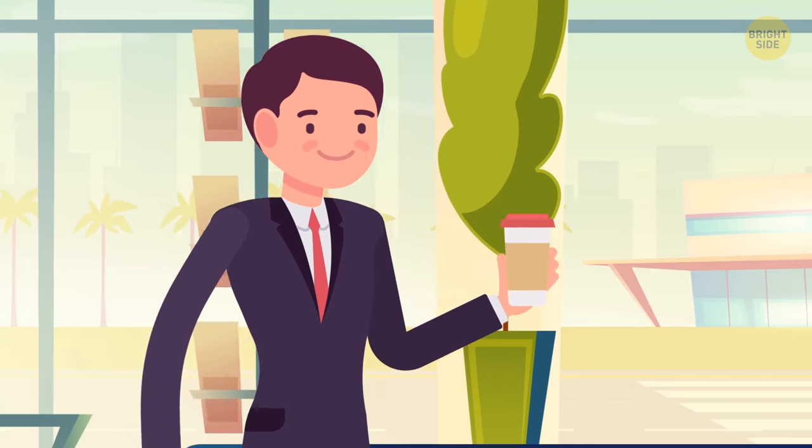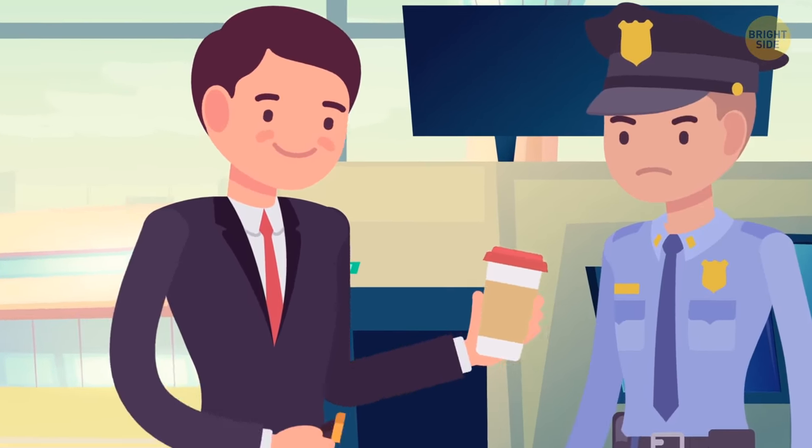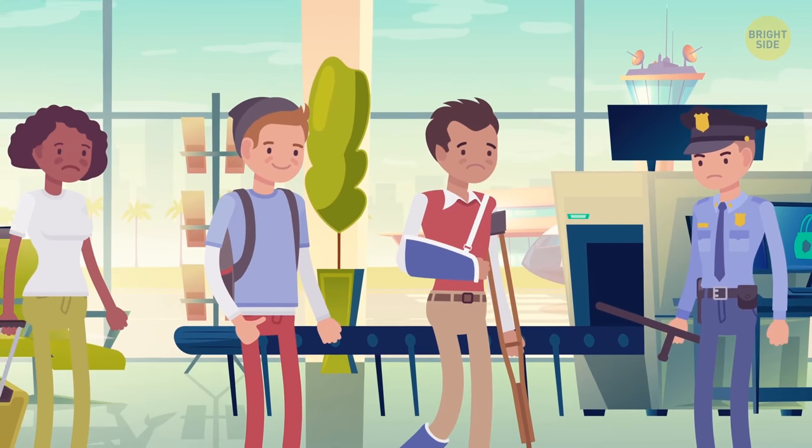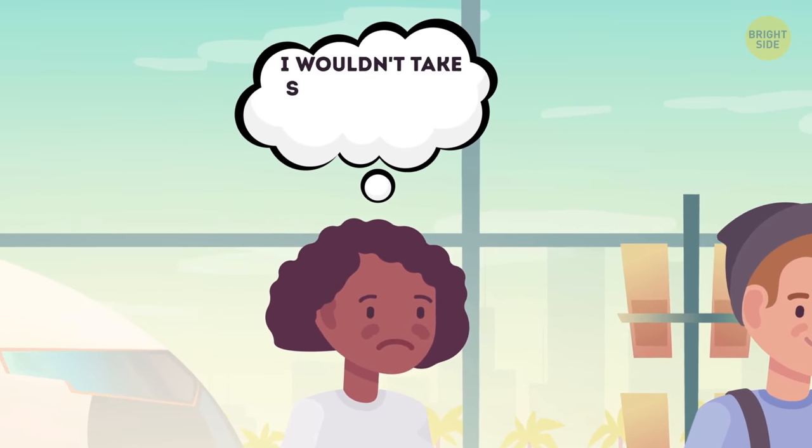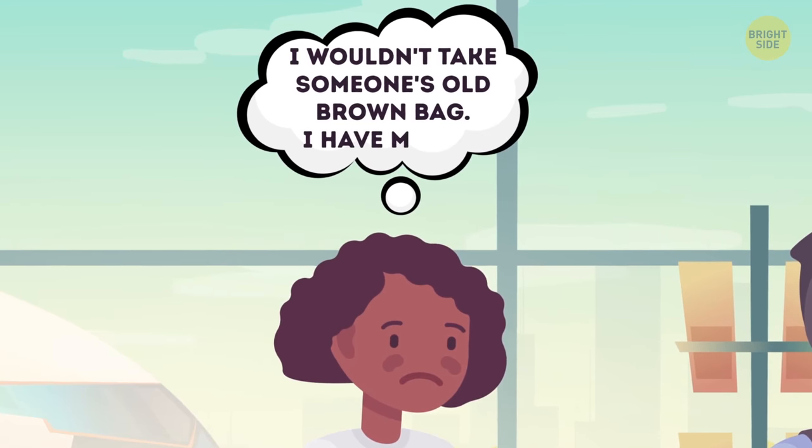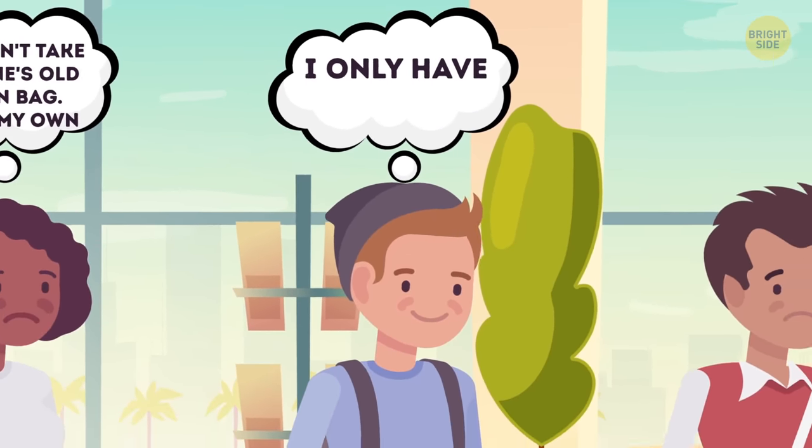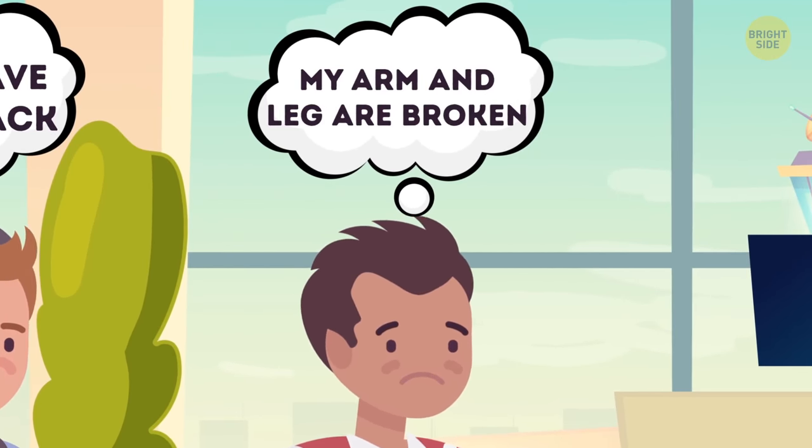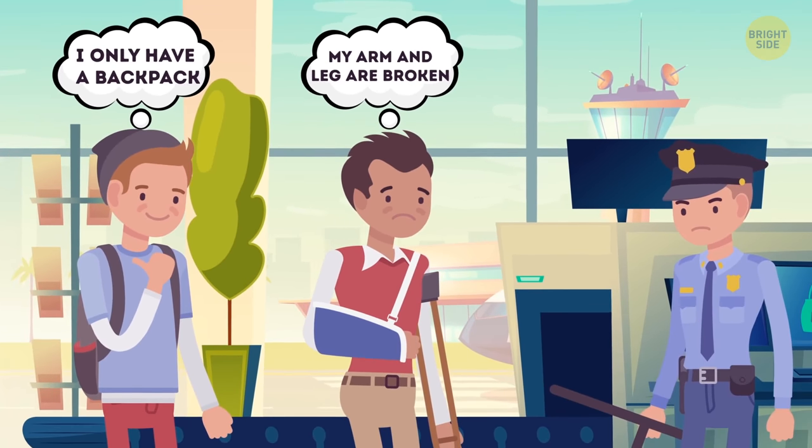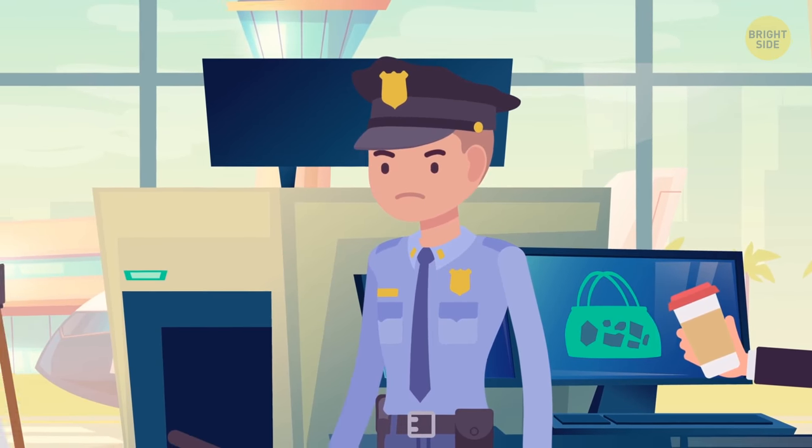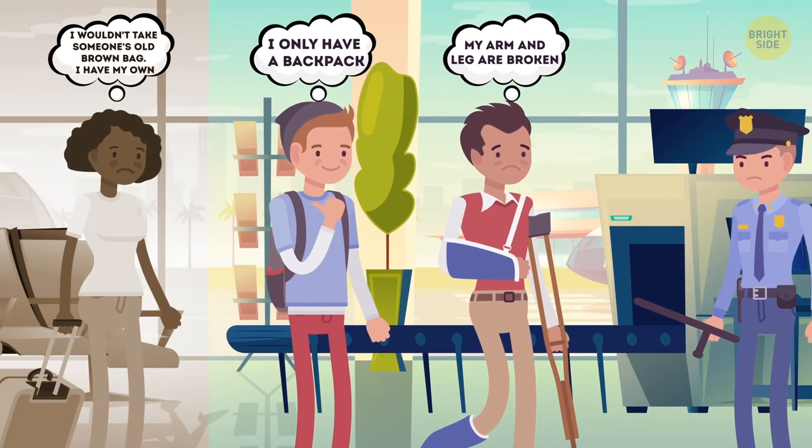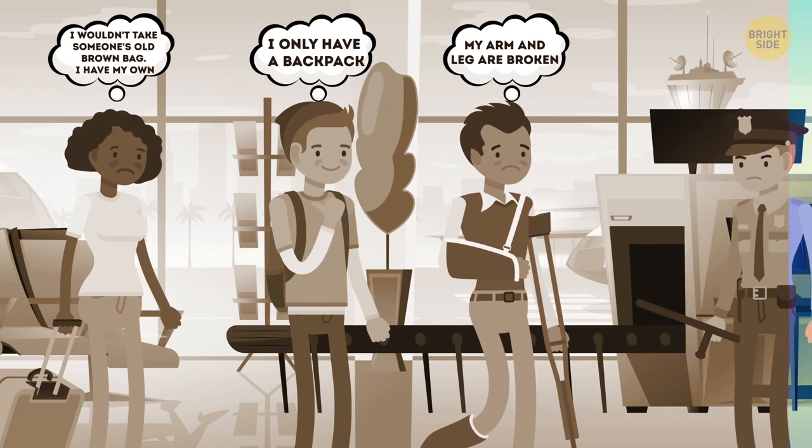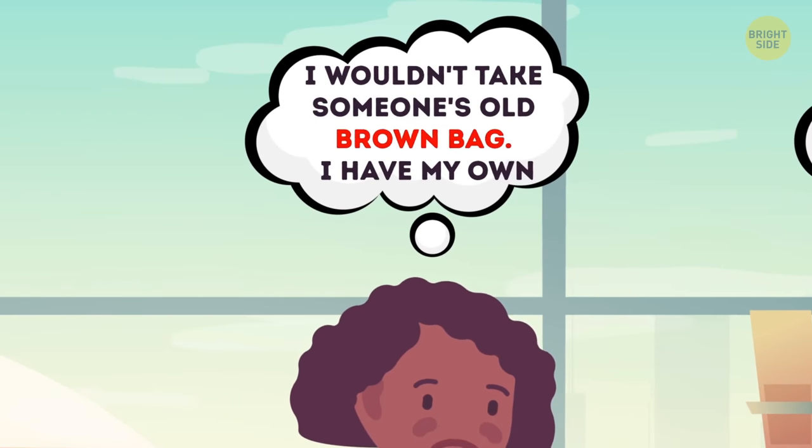A businessman was about to go through a security check at the airport when he realized someone had taken his luggage. The airport police had three suspects who had to be interviewed. Lisa said, I wouldn't take someone's old brown bag. I have my own. Mike explained he was a light traveler and didn't have luggage. He put everything in his backpack. Rob had a broken arm and a sprained ankle. He could hardly carry anything. The police immediately knew who had done it. Can you figure it out? It was Lisa. Nobody told her the luggage was brown.